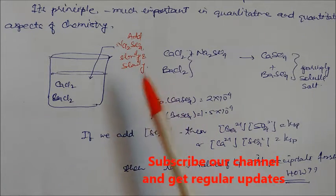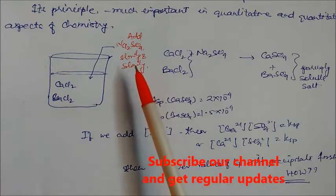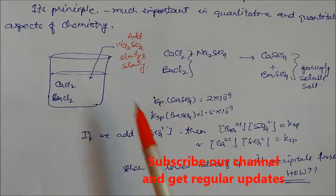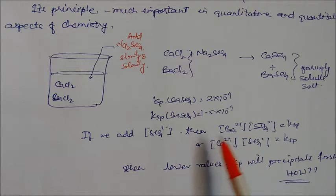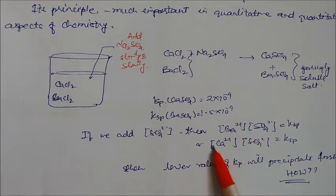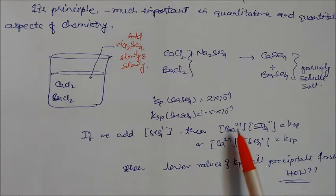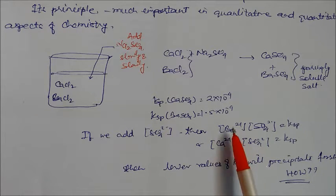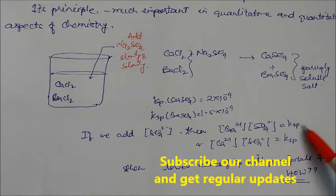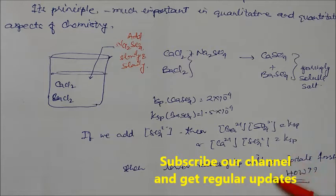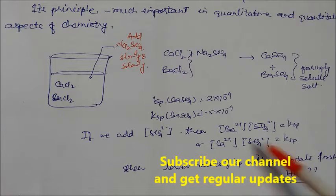If you continuously add sulfate as the precipitating agent, its concentration increases. The concentrations of barium and calcium ions subsequently decrease. Multiplying the concentration of barium and sulfate gives the Ksp value. The basic principle is: whichever species has the lower Ksp value will precipitate first.